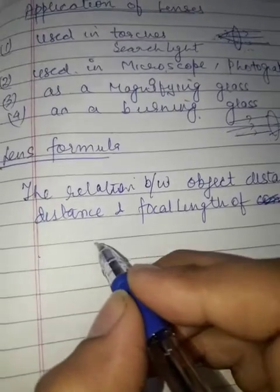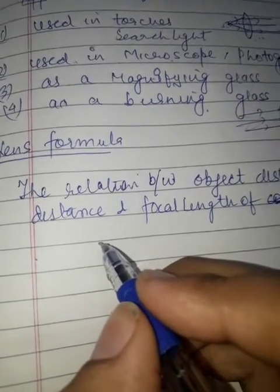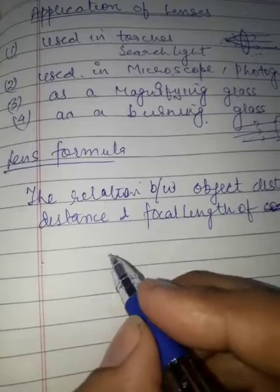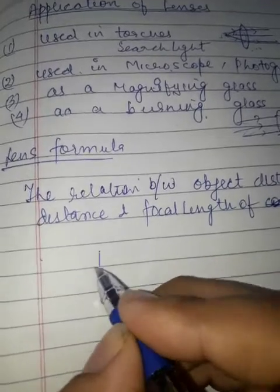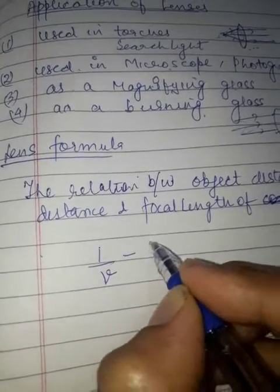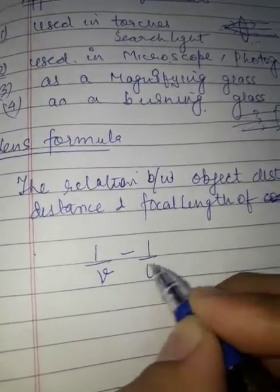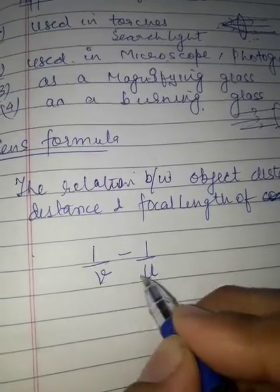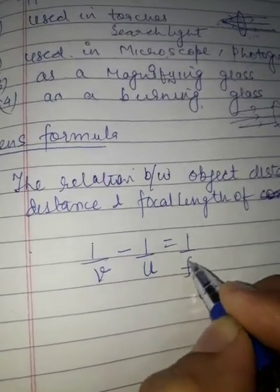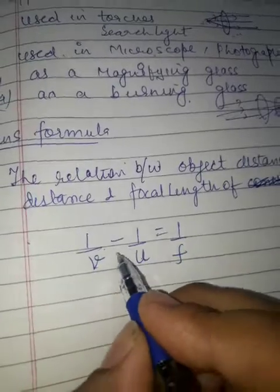We did the mirror formula earlier — that was: 1/v + 1/u = 1/f. Now for the lens formula, it is different: 1/v − 1/u = 1/f. Here, v is the image distance, u is the object distance, and f is the focal length. So the lens formula has a minus sign.